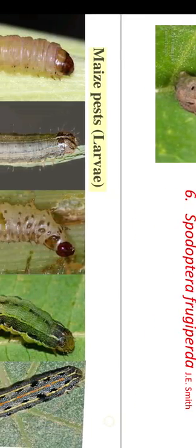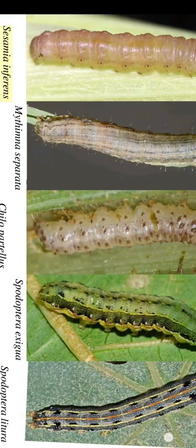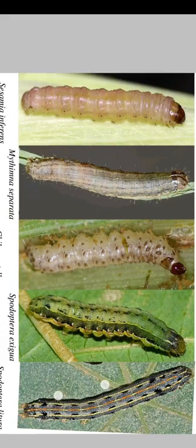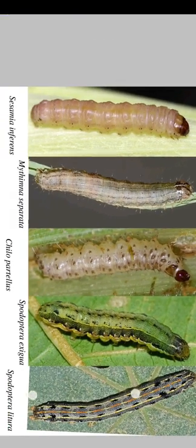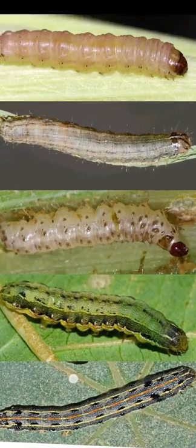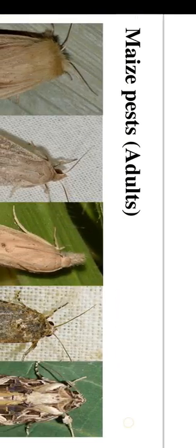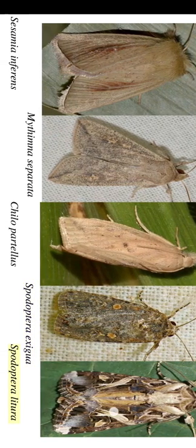Maize pests — larvae: Mythimna separata, Sesamia inferens, Spodoptera exigua, Jalopartellus, Spodoptera litura. Maize pests — adults: Mythimna separata, Sesamia inferens, Jalopartellus, Spodoptera exigua, Spodoptera litura.